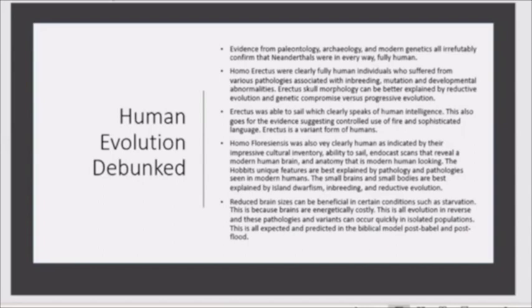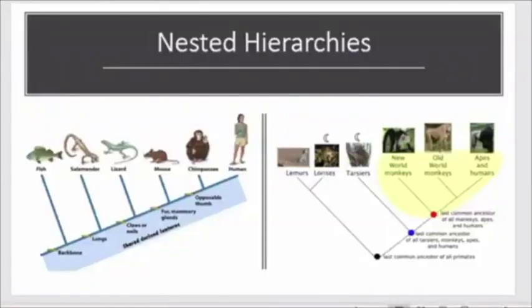Reduced brain sizes, for example, can be beneficial in certain conditions such as starvation. This explains the smaller brain sizes that we do see in some of the hominins. This is because brains are energetically costly. This is all evolution in reverse, and these pathologies and variants can occur quickly in isolated populations. This is all expected and predicted in the biblical model post-Babylon, post-flood.